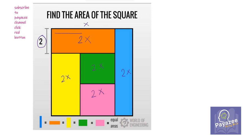If this side is x, then this will also be x as these are parallel to each other. So this will be x. This will be, suppose it is y.